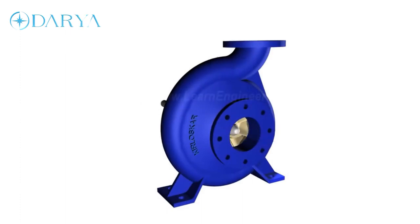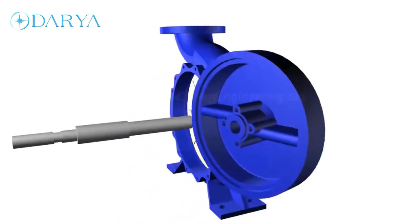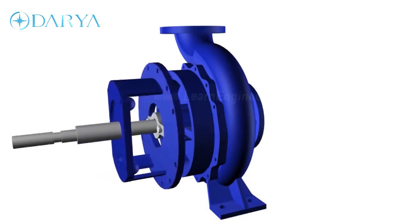Since water pressure inside casing is huge, a proper sealing arrangement is imperative in arresting water leakage through shaft casing clearance. Mechanical seal or stuffing box based mechanism is used for this purpose.